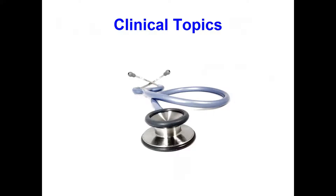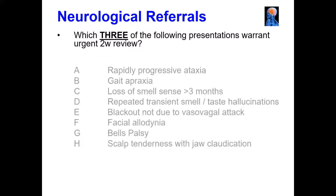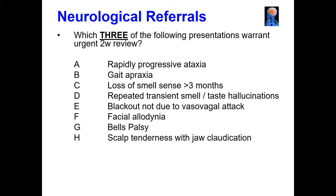Clinical topics: neurological referrals are very topical based on NICE guidance. For example: which three of the following presentations warrant an urgent two-week review? Options include: A) rapidly progressive ataxia, B) gait apraxia, C) loss of smell for more than three months, D) repeated transient smell/taste hallucinations, E) blackout not due to a vasovagal attack, F) facial anodynia, G) Bell's palsy, H) scalp tenderness with jaw claudication. The answers are A, D and E — reflecting conditions such as a space-occupying lesion, a vascular event, and not missing something like epilepsy.